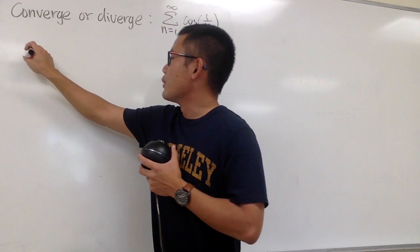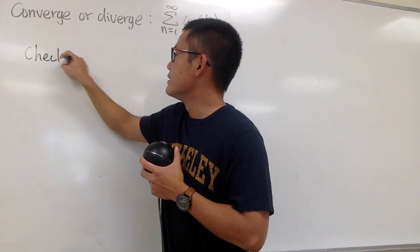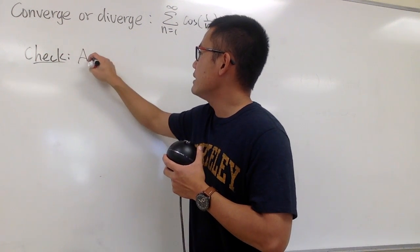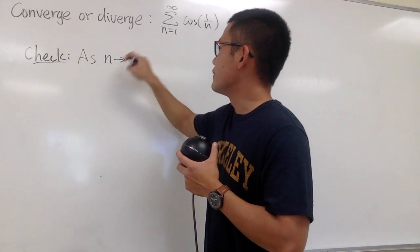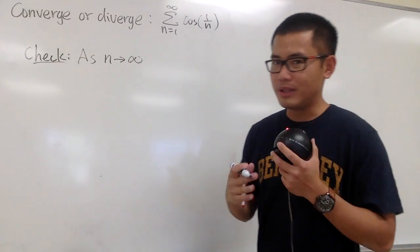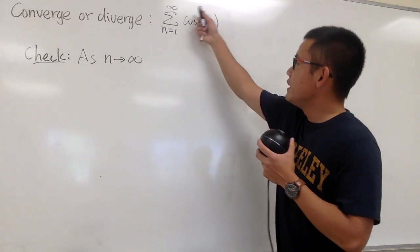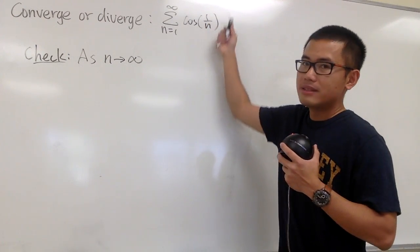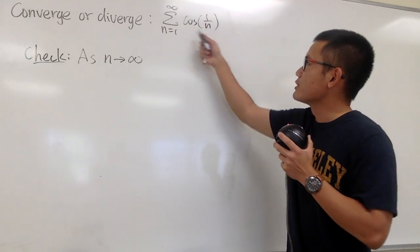Let me show you. So we are going to check, and this is the write-out for it, as n goes to infinity. Here, I just have to put down n because I don't need to do L'Hopital's rule. I'm just looking for the a_n. Remember, this is the sequence, right? The sequence formula, cosine of 1 over n.